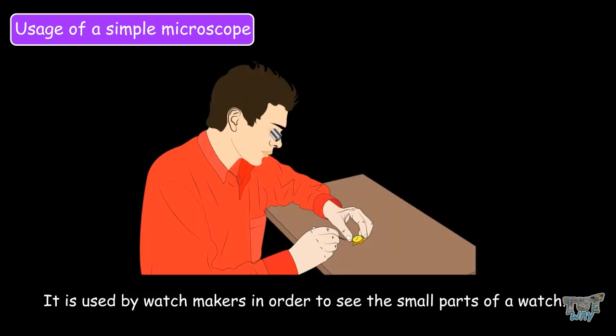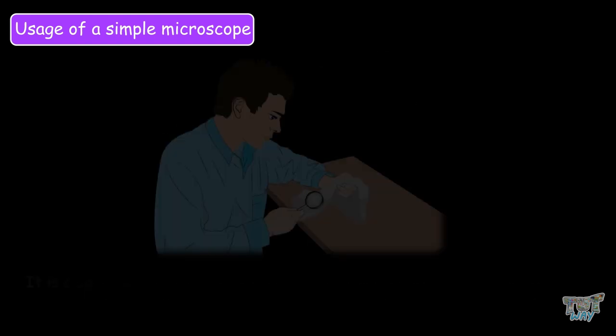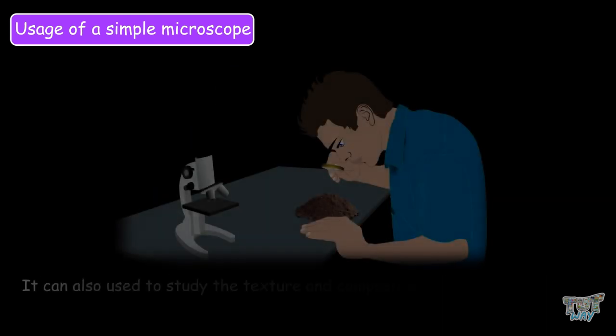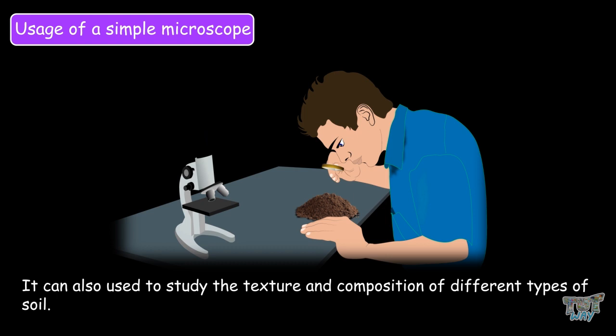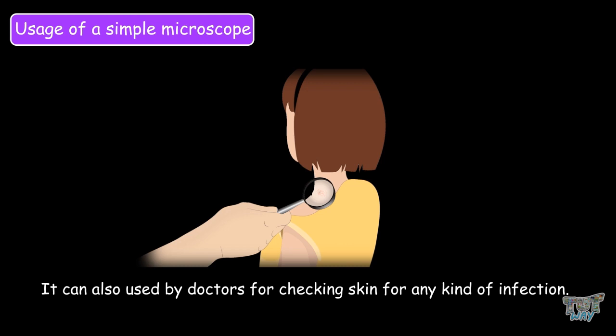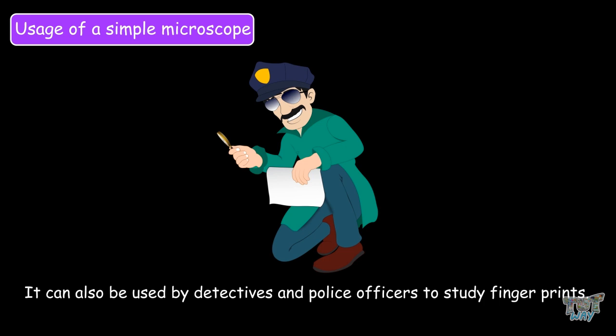Now let's learn the uses of the simple microscope. It is used by watchmakers in order to see the small parts of the watch. It is also used by jewelry makers, so as to make beautiful jewelry. It is also used to closely observe textures of fibers or threads of a cloth. It can also be used to study the texture and composition of different types of soil. It is also used by doctors for checking the skin for any kind of infection. It is also used to study ancient engravings and stones and fossils. It can also be used by detectives and police officers to study fingerprints. So these were some of the uses of the simple microscope.